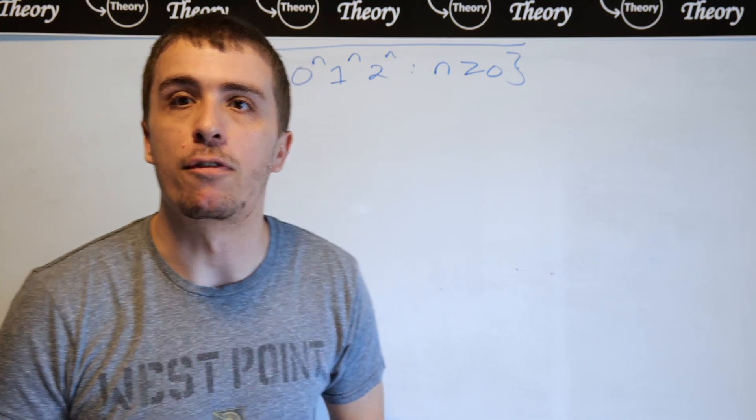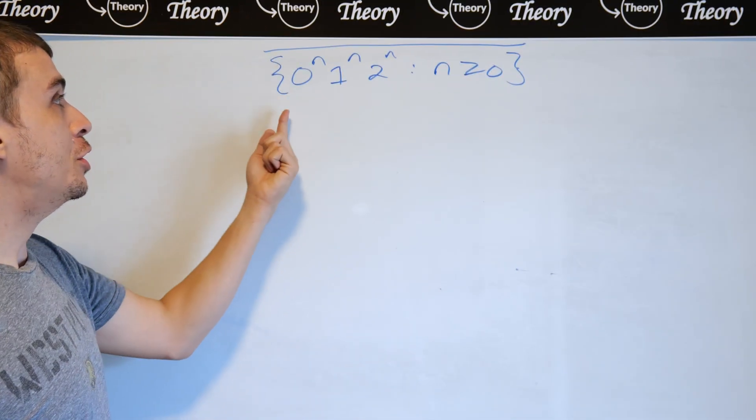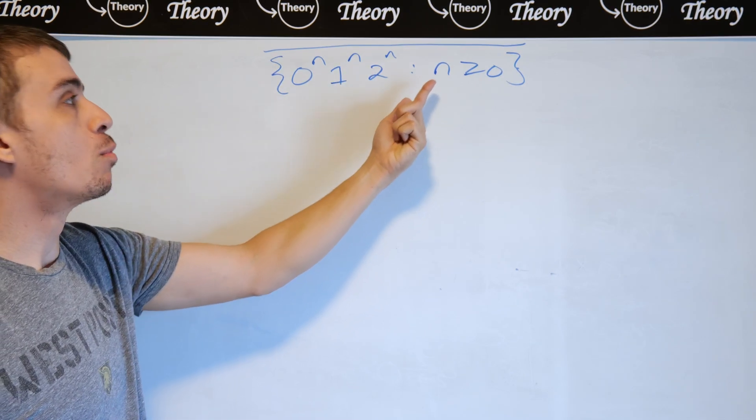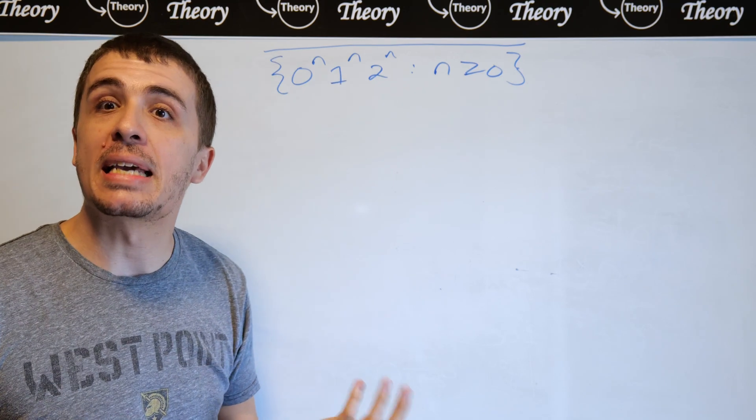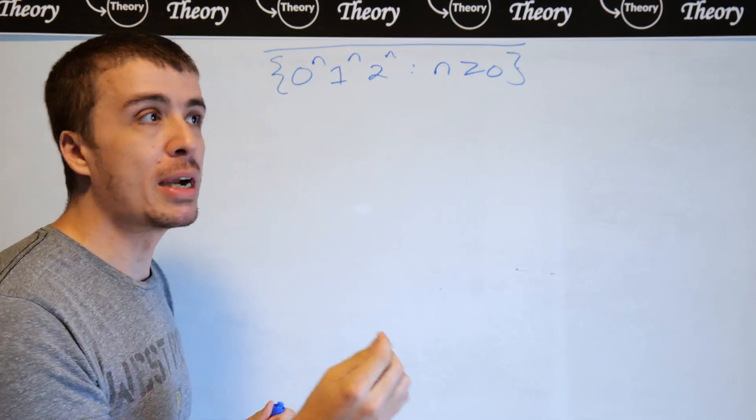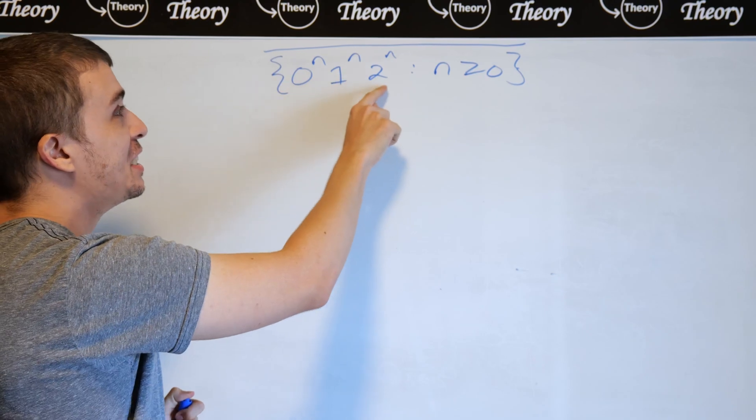Okay, so let's make a context-free grammar for this language, which is 0 to the n, 1 to the n, 2 to the n, where n is at least 0, and notice the little bar upstairs, which indicates complement. So it's the set of all strings that are not in this set.